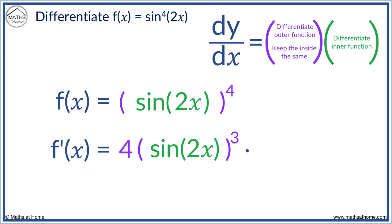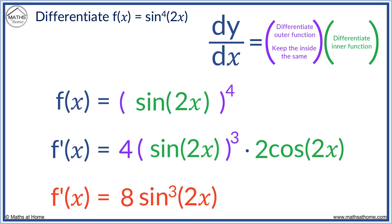Sine 2x requires the chain rule. Sine differentiates to cos and we must multiply this by the derivative of 2x which is 2. To simplify, 4 times 2 equals 8. We can write sine 2x cubed like so and we have cos 2x.